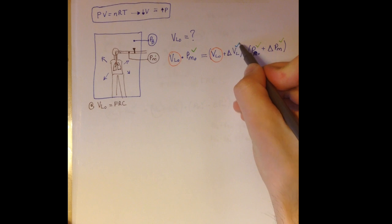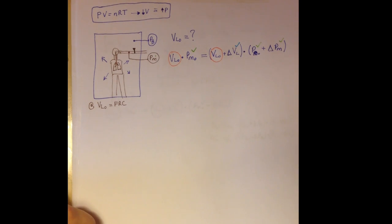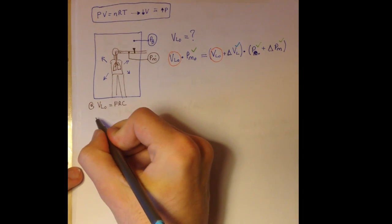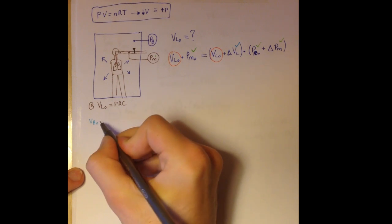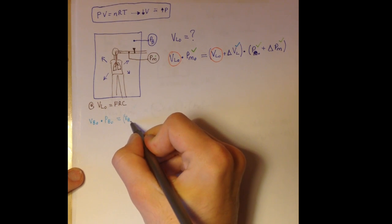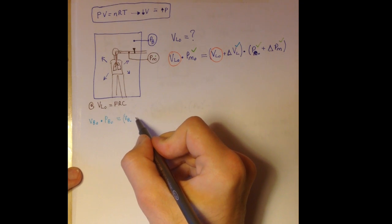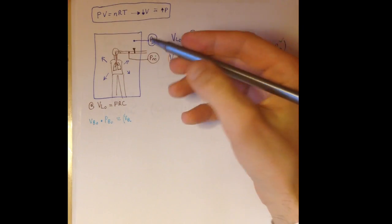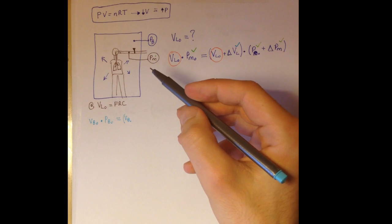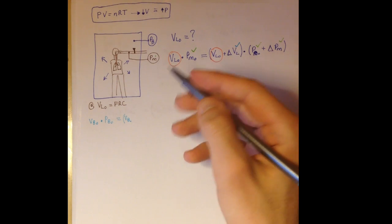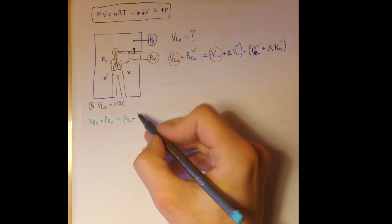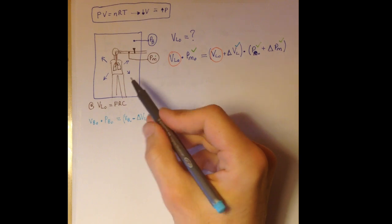Here is the link between the pressure of the box and the volume of the lung. What you know is that the volume of the box at the start of the experiment multiplied by the pressure of the box at the start of the experiment — applying the same principle — is equal to the volume of the box plus the change in the volume of the box. The thorax expands into the box, so it takes up volume from the box. The drop in the volume of the box is the same as the increase in the volume of the thorax, just with a negative sign, so you can subtract the increase in lung volume here, and you will get the same thing as the decrease in the box volume.